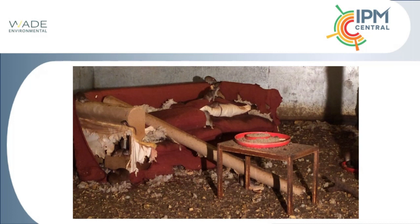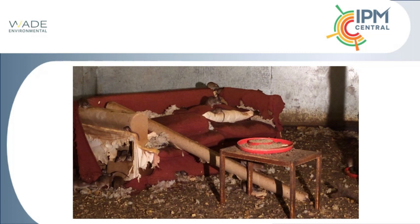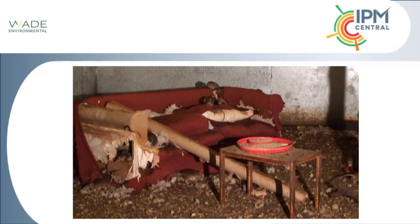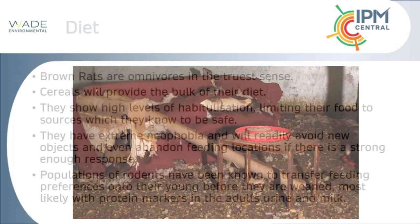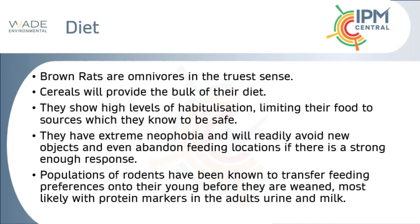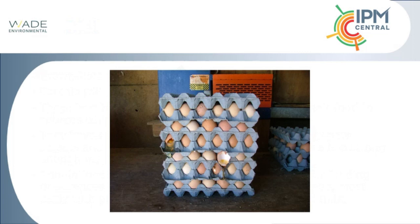Rodent eyesight is terrible — about 20/600 vision, meaning a sign at 20 feet would need to be roughly 600 inches high for them to read it. They are also dichromatic, seeing only greens and blues — effectively colourblind. Their eyes are positioned on top of the head, highly indicative of a prey animal. All their behaviour — running alongside objects, operating at night — is because they are at the bottom of the food chain, hiding throughout the day while we are active.